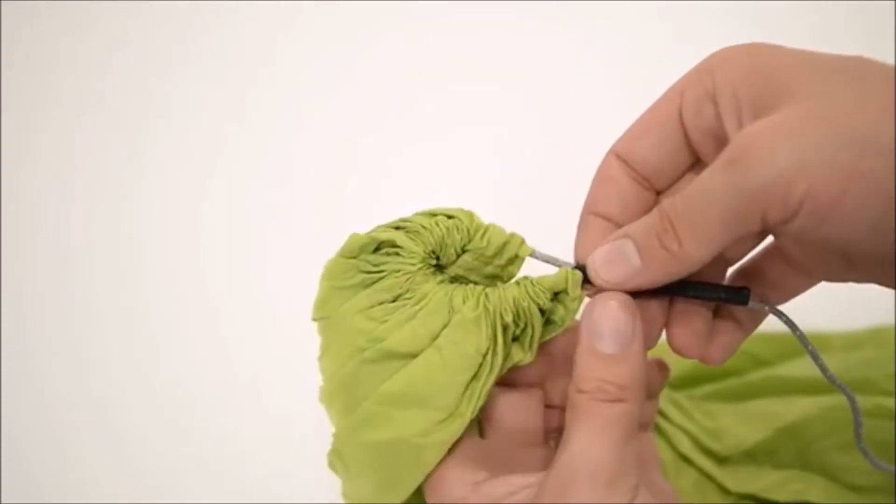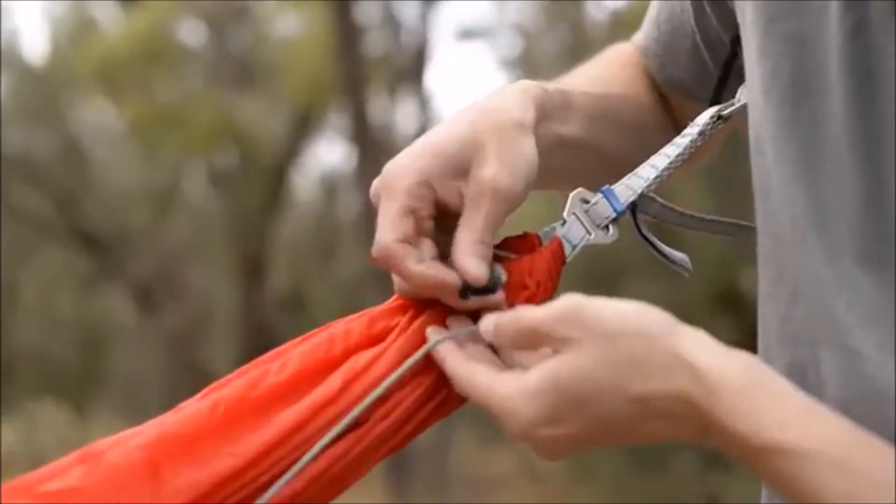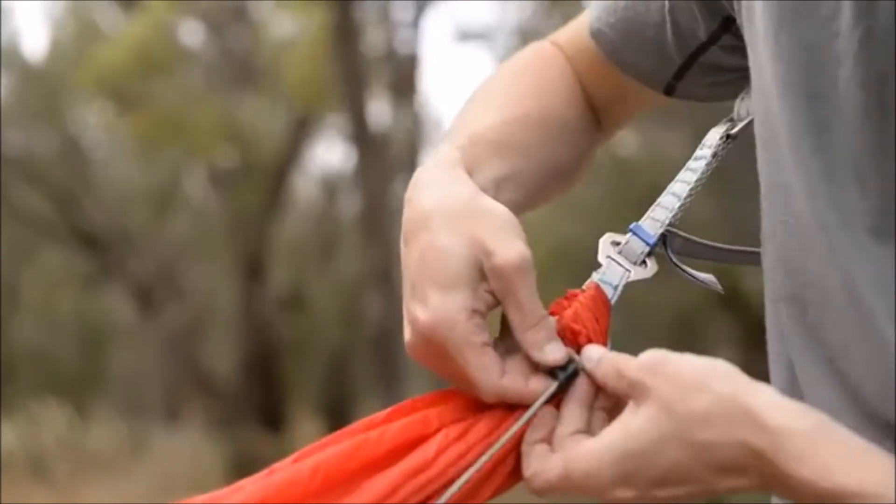Reflective 3mm cord runs through the hammock throat, allowing easy attachment to your hammock. Running the cord through your buckle system provides easy setup and adjustment through the included cam.